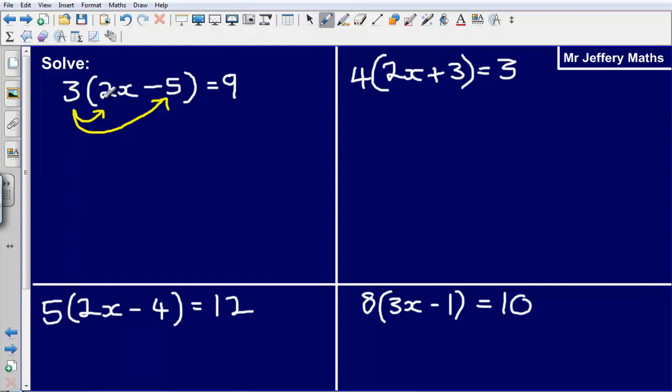So 3 multiplied by 2x is going to give me 6x, 3 multiplied by minus 5, that will give me minus 15. All I'm doing there is multiplying out the bracket by multiplying everything that's inside the bracket by the number on the outside. That is equal to 9.